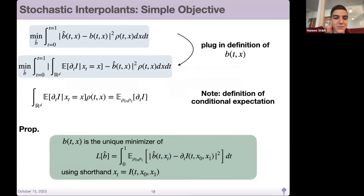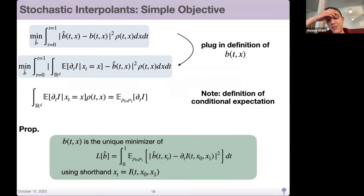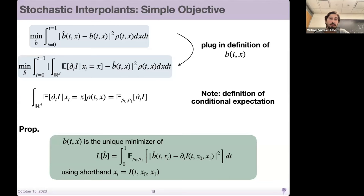In L(b_hat), for the time derivative of i, this would just be x1 minus x0 if we look at the linear stochastic interpolant example. We like to write this generally, though, because there are nice things you can say if i is a nonlinear function or some other unexplored aspect. But in general, yes, it can be very straightforward.